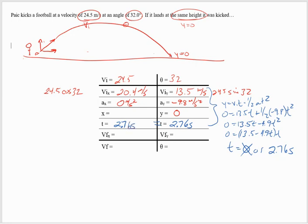From there, I know three things on this side where I can find the X displacement using the same equation: X equals VIT plus one half AT squared. But remember, because X acceleration is zero, that term cancels out. So I can do X equals 20.4 times 2.76, which gives me a total X displacement of 56.2 meters.